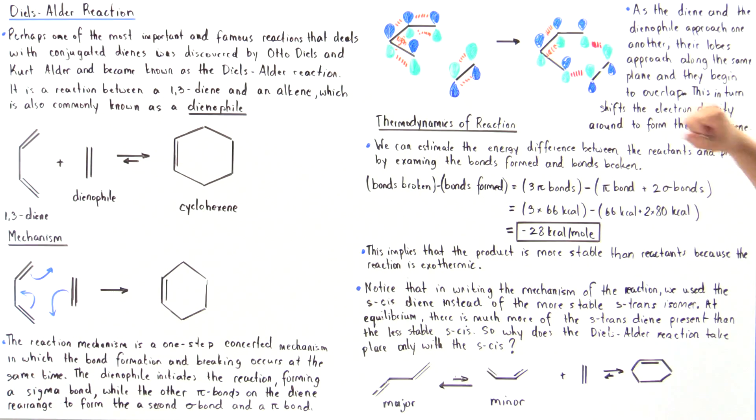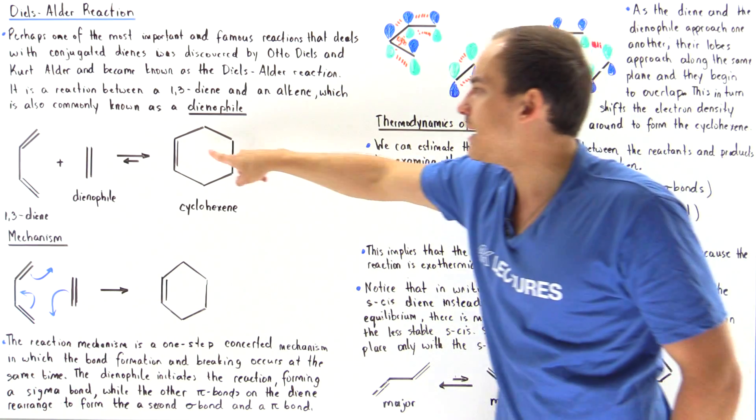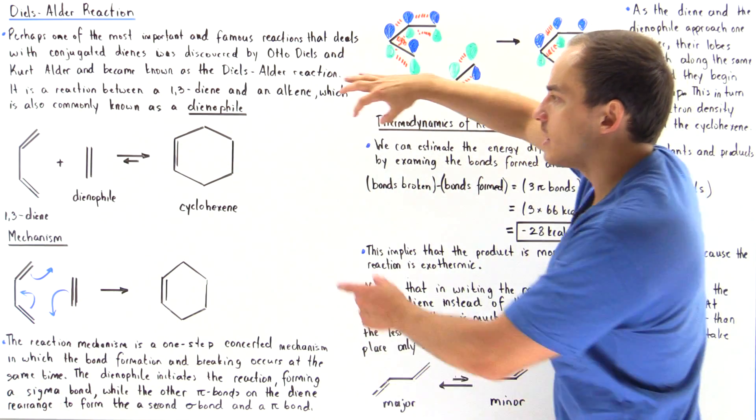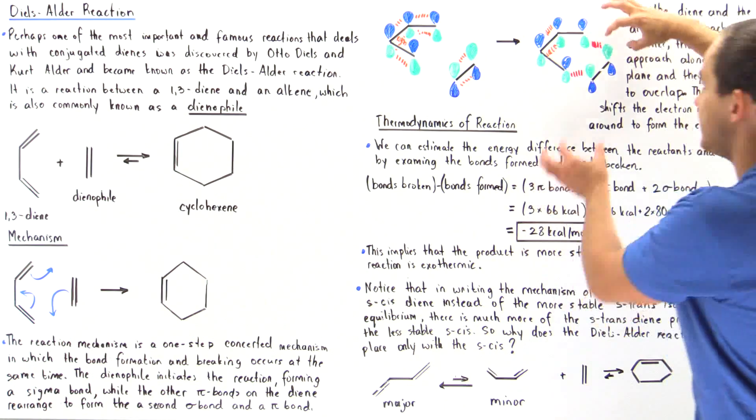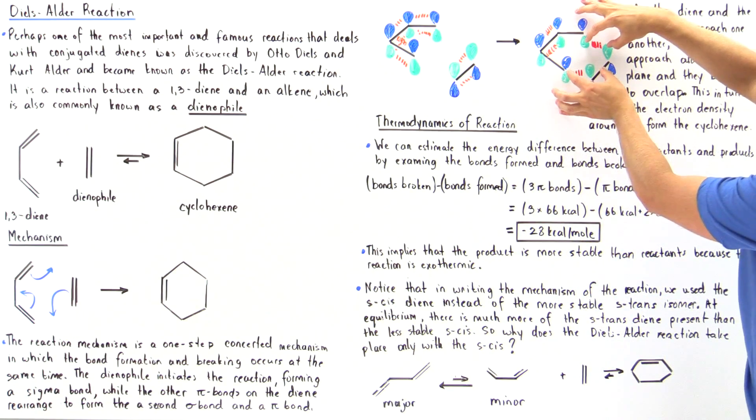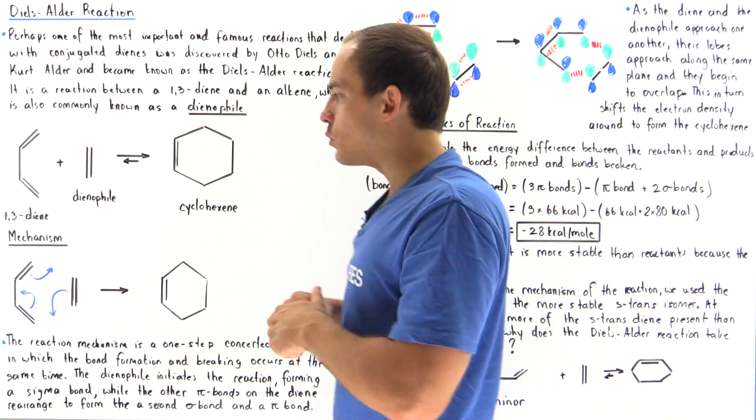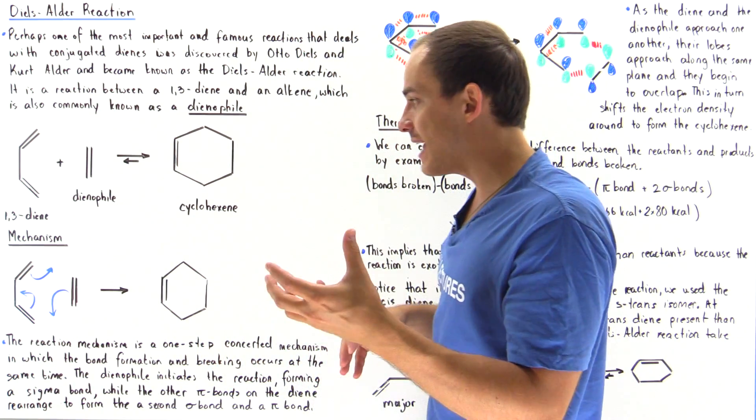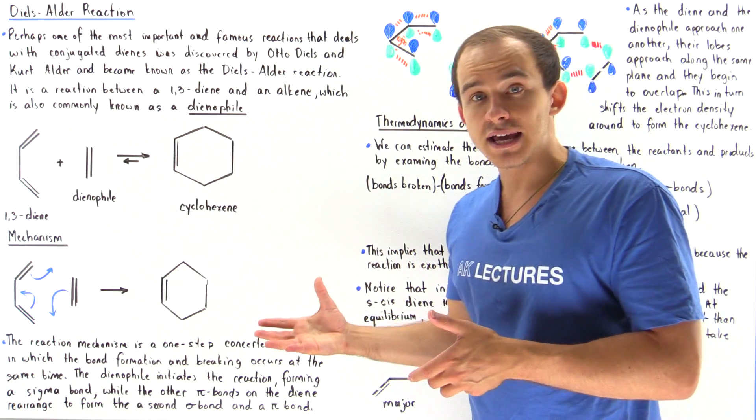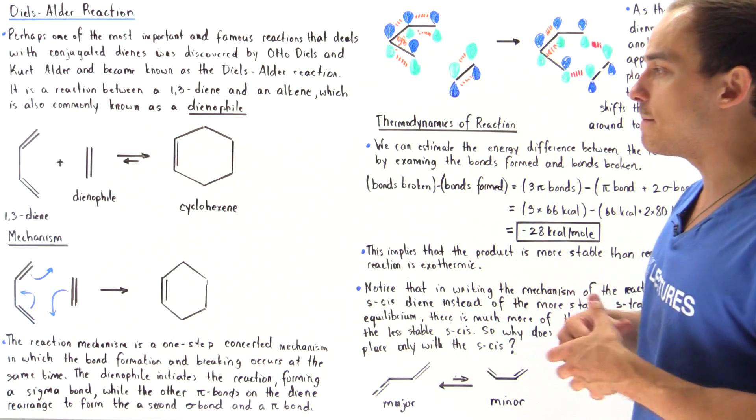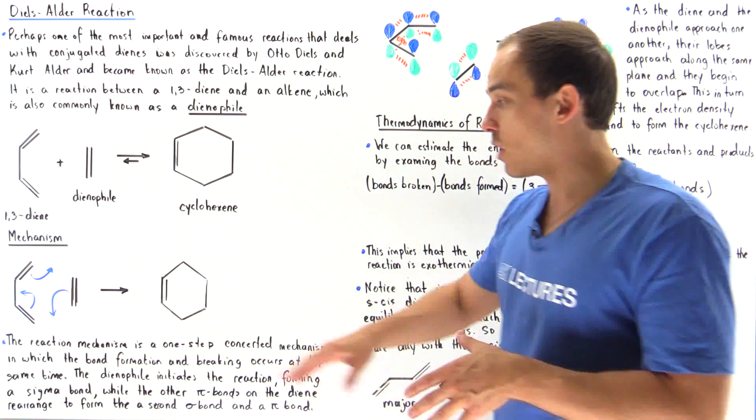it shifts the electron density around in such a way to form a pi bond here, and the electron density which was initially here and here ends up being here, forming our two single sigma bonds. In the next lecture we're going to look in much greater detail at why this type of mechanism takes place as compared to a two-step mechanism. So now let's discuss the thermodynamics of our reaction.